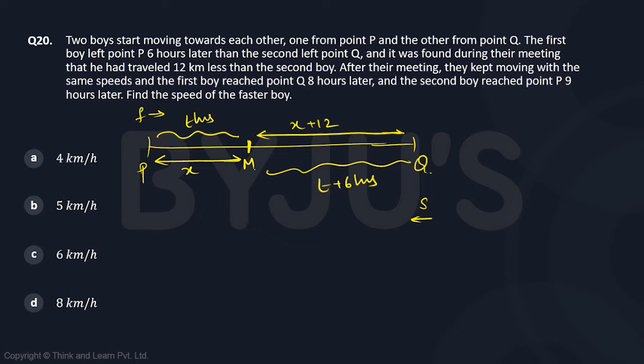After their meeting, they kept moving with the same speed and the first boy reached point Q 8 hours later. So the first boy takes 8 hours and the second boy takes 9 hours. Now consider your distance MQ.